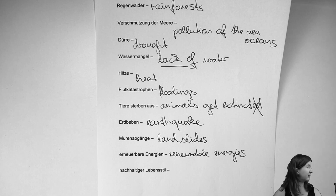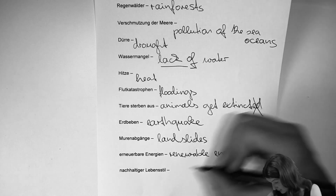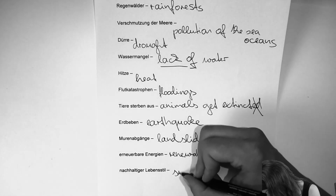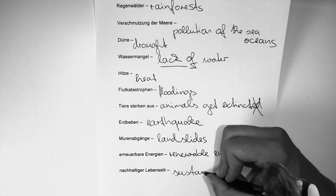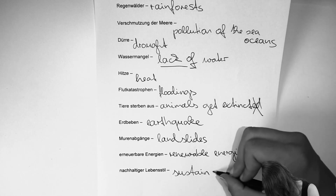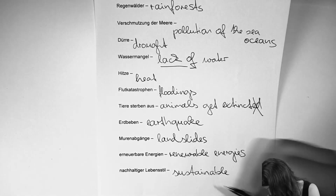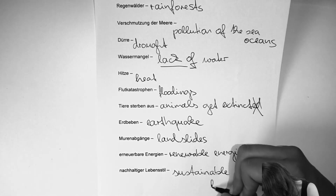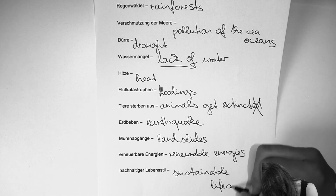And the 'nachhaltige Lebensstil' — the 'Lebensstil' part is probably clear: lifestyle. But 'nachhaltig' means sustainable. So: a sustainable lifestyle.